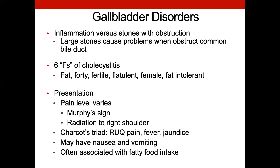Let's move into gallbladder disorders. Most people think about stones or sludge in the gallbladder producing an obstruction, and typically that's the cause. Remember the 6 F's of cholecystitis from nursing: fat, 40, fertile, flatulent, female, and fat intolerant — these are the characteristics of the common cholecystitis patient. These patients should be easily identified. They should have a positive Murphy's sign, and pain levels depending on tolerance may run anywhere from 6 to 10.